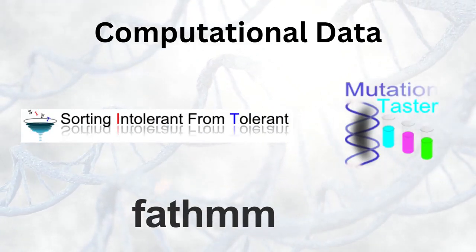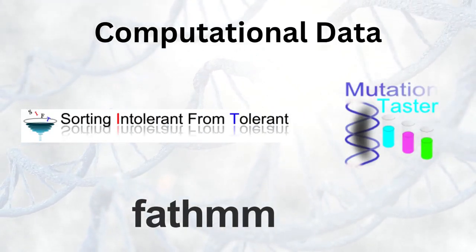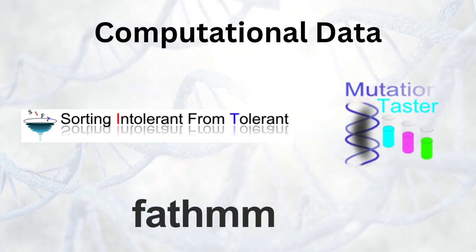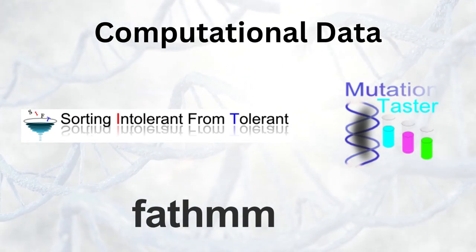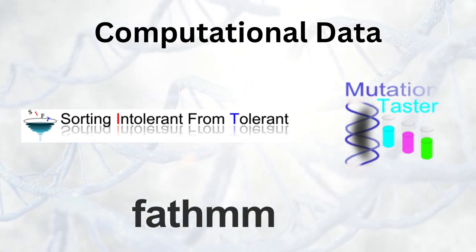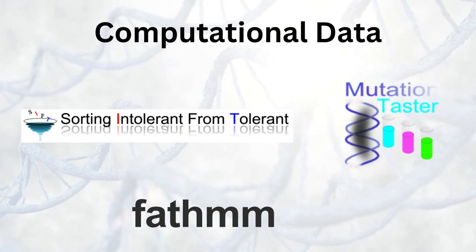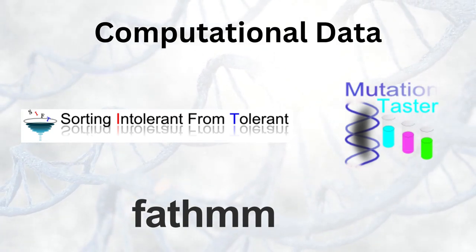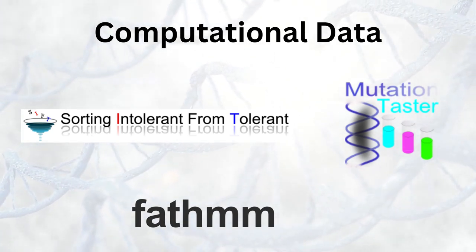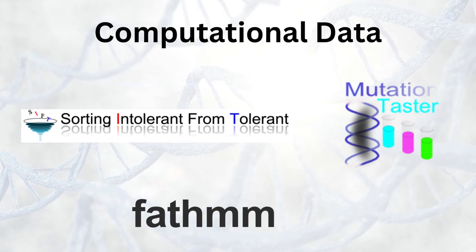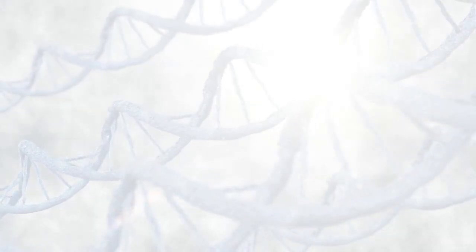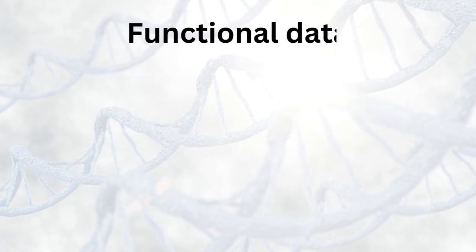Computational data, such as in silico prediction tools or computational models, can also provide information concerning a variant's pathogenicity. Importantly, however, computational data in general is weighted with low priority.